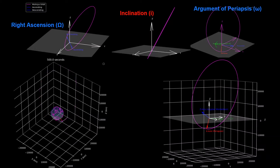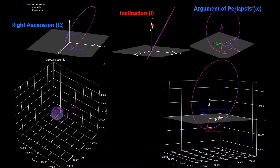This video will cover a quick explanation of what Euler angles are, and then go deep into the details of how these three angles describe the orientation of any orbit with respect to the Earth-centered inertial equatorial frame. If you'd like to learn more details about Euler angles or the Earth-centered equatorial inertial reference frame, there will be links in the description to videos that go deeper into those topics.